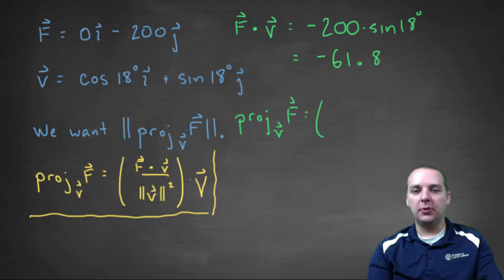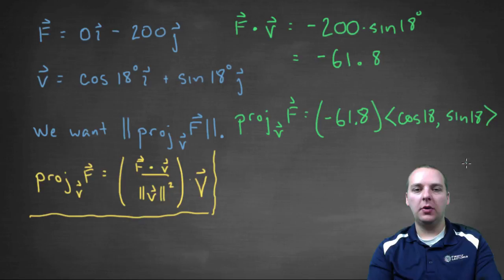Let me just write this a little bit larger. It's just going to be negative 61.8 period, because it's divided by one. Times, I'm going to switch this vector V to component form to squinch it in, times cosine 18 comma sine 18.